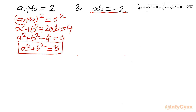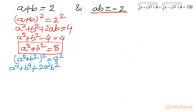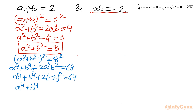Now I will calculate a to the power 4 plus b to the power 4. Squaring (a² plus b²): (a² plus b²)² equals 64. Expanding gives a⁴ plus b⁴ plus 2(ab)² equals 64. Since ab equals minus 2, (ab)² equals 4, so 2 times 4 equals 8. Therefore a⁴ plus b⁴ equals 64 minus 8, which is 56.